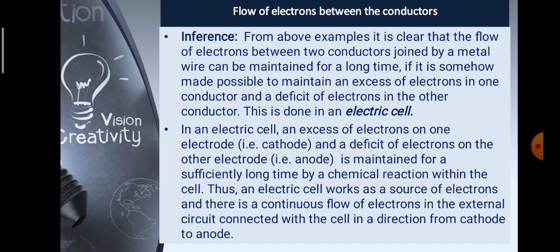From the above examples, it is clear that the flow of electrons between two conductors joined by a metal wire can be maintained for a long time if it is somehow made possible to maintain an excess of electrons in one conductor and a deficit of electrons in the other conductor. This is done in an electric cell. In an electric cell, an excess of electrons on one electrode — the cathode — and a deficit of electrons on the other electrode — the anode — is maintained for a sufficiently long time by a chemical reaction within the cell. Thus, an electric cell works as a source of electrons, and there is a continuous flow of electrons in the external circuit from cathode to anode.